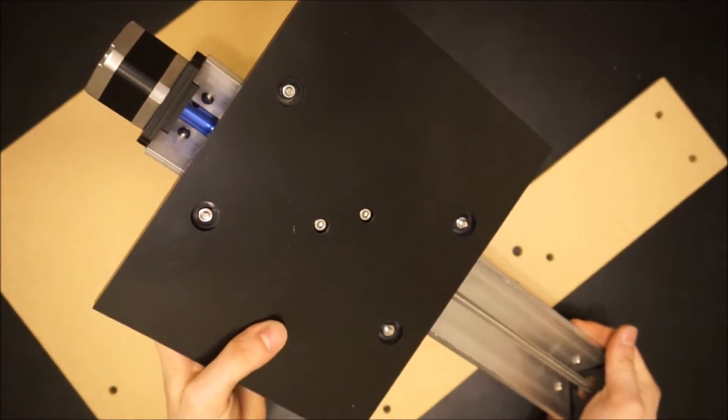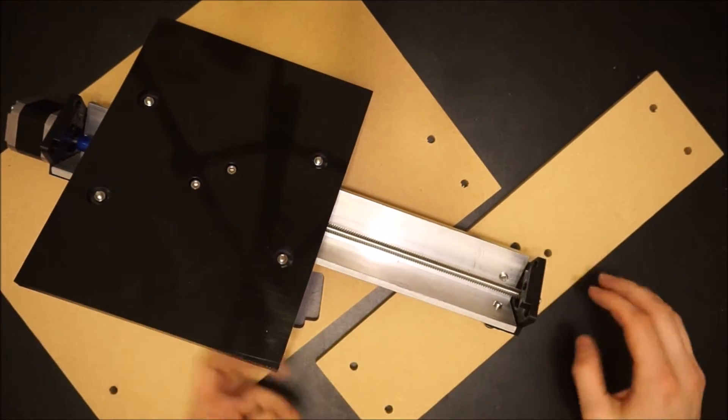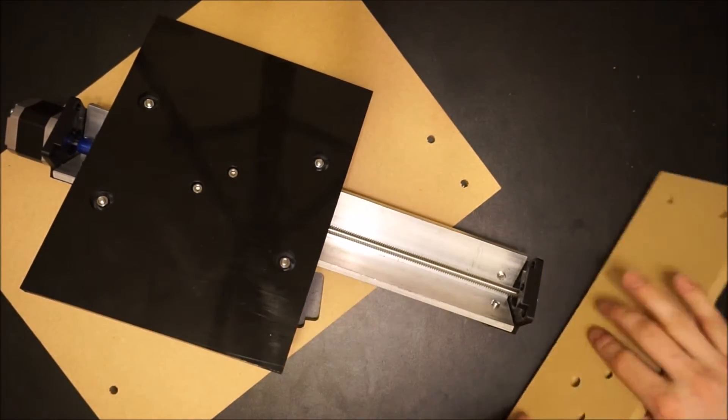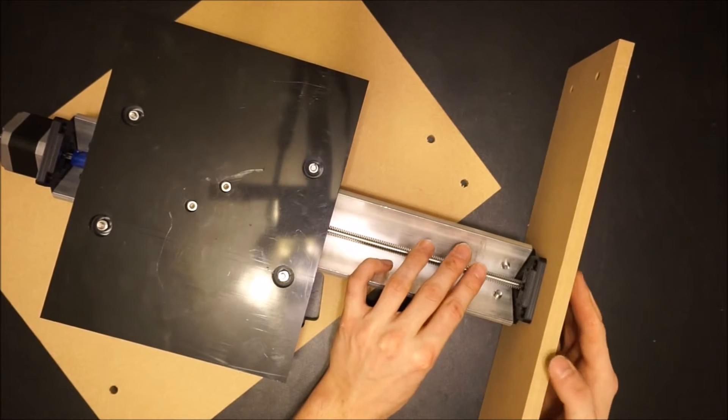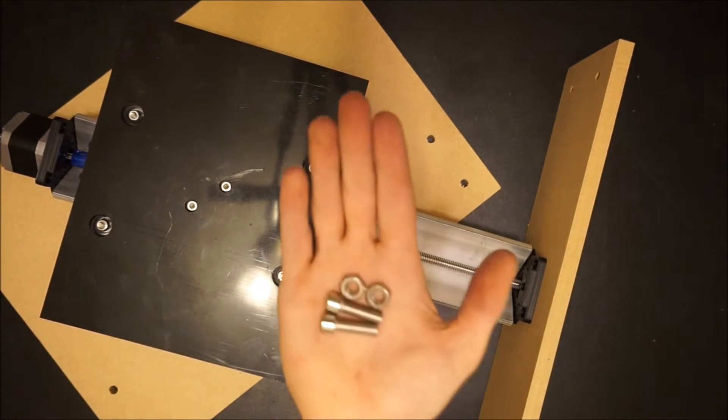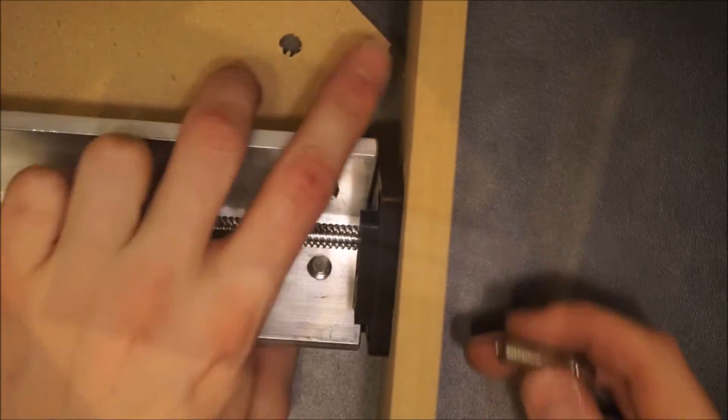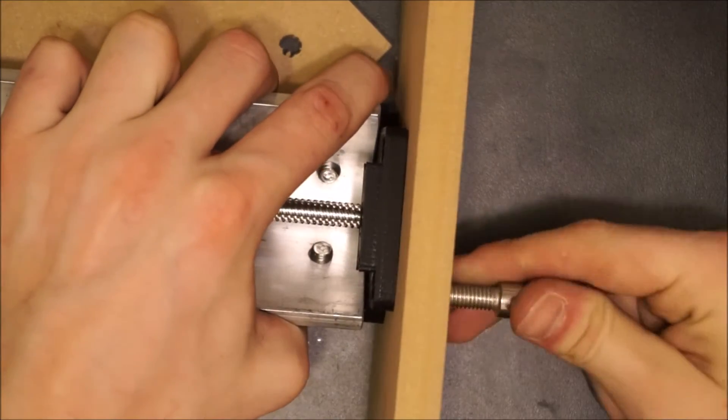Grab your assembled Y-axis system. You'll be attaching it to the front and back frame pieces. Be sure to do this assembly on a flat surface. Attaching each side will require two of the longer M8 screws and two M8 nuts.